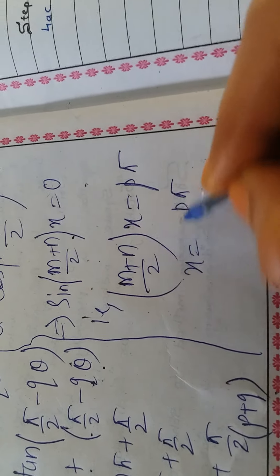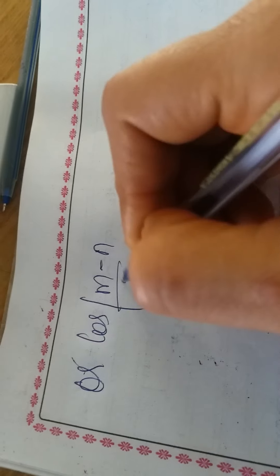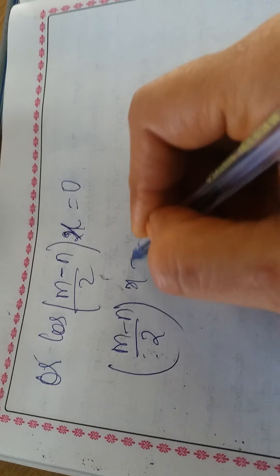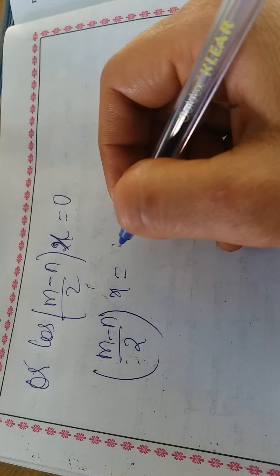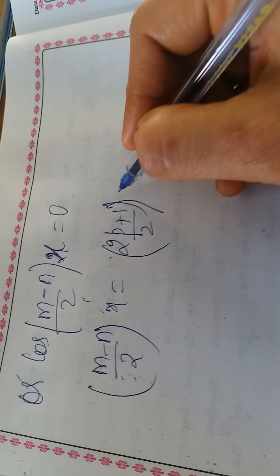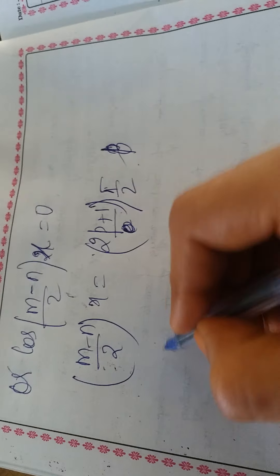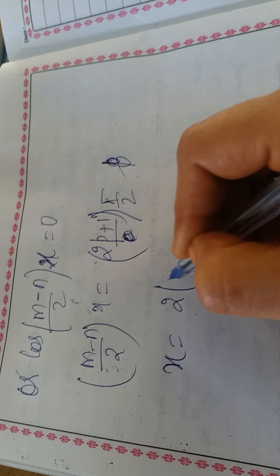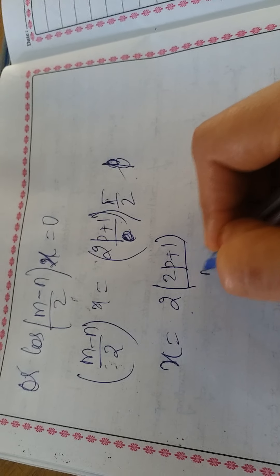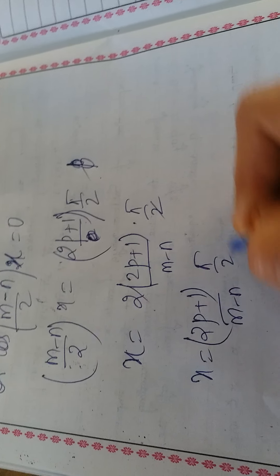For the cosine term: cos((m-n)x/2) = 0. Applying cosθ = 0 ⟹ θ = (2p+1)π/2 (odd multiples of π/2). So (m-n)x/2 = (2p+1)π/2, which gives x = (2p+1)π/(m-n), p ∈ ℤ.